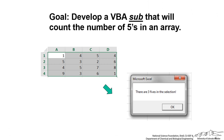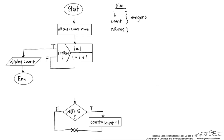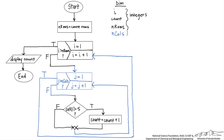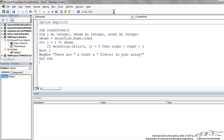Moving along, we are going to develop a VBA sub that counts the number of 5's in an array. Now instead of just a column vector, we count 5's across an array. The difference is that we now do a double iteration — iterating not only through the rows of a single column, but also through multiple columns. Our flowchart will look a little different, including another nested iteration.